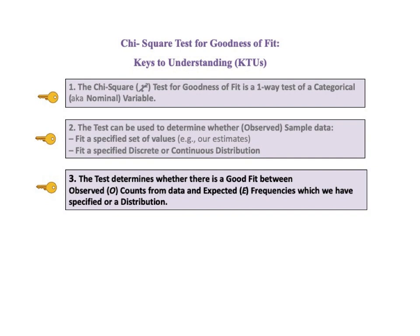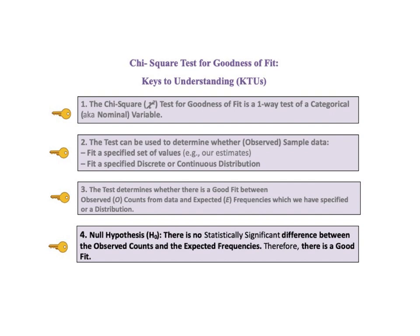Key number 3 says the test determines whether there is a good fit between the observed O counts from data and the expected E frequencies, which we have specified, or between the observed counts and a distribution. Key to understanding number 4 states the null hypothesis, H0, of this test: there is no statistically significant difference between the observed counts and the expected frequencies, therefore there is a good fit.